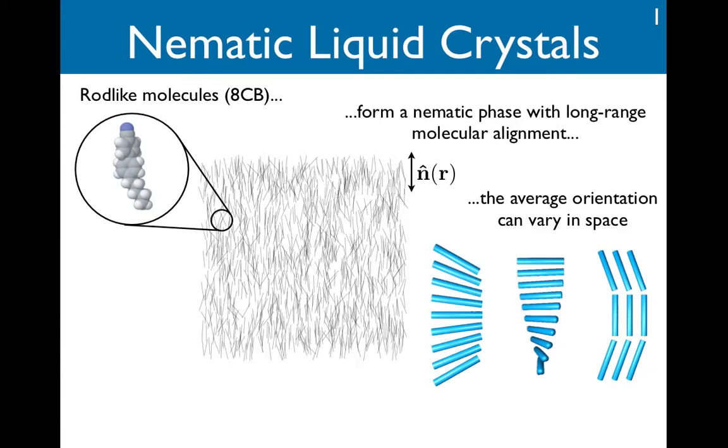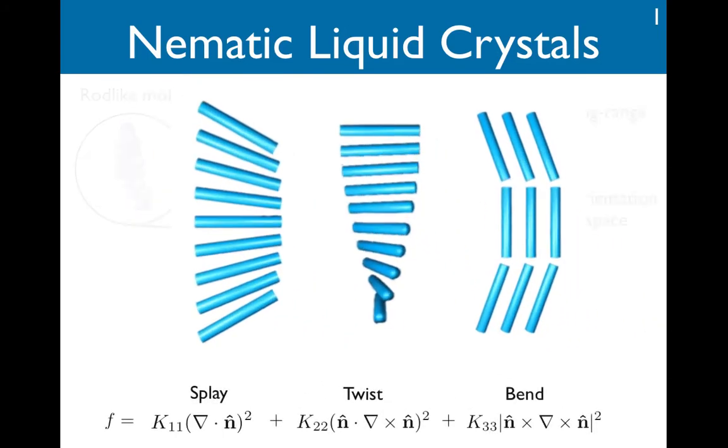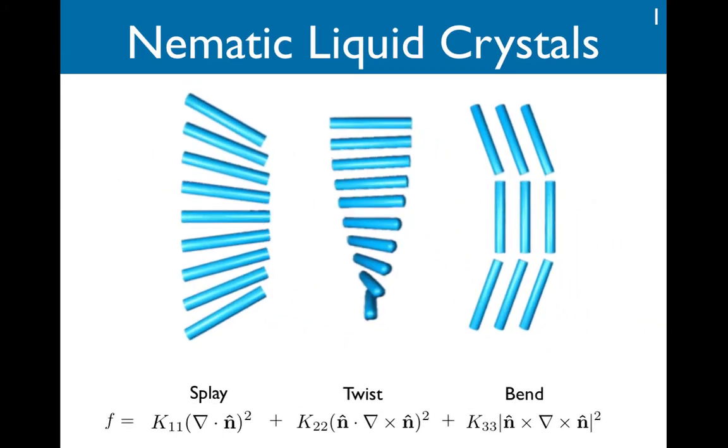Rod-like molecules in a certain temperature range form a fluid mesophase called a nematic, which has long-range molecular order. The average orientation is described by a unit vector field, which can vary in space, so we can form an elastic theory. An arbitrary variation can be decomposed into these three linearly independent deformations called splay, twist, and bend,